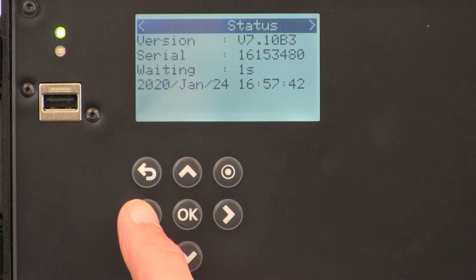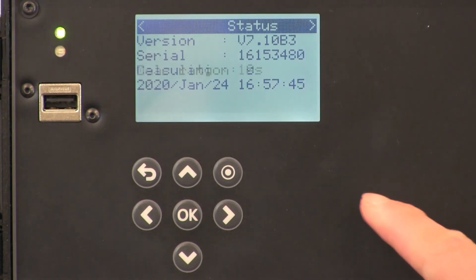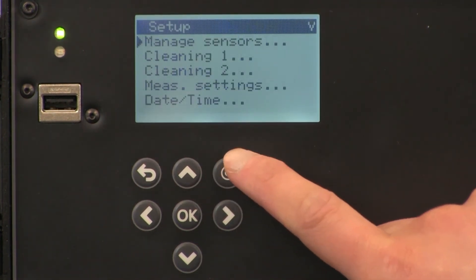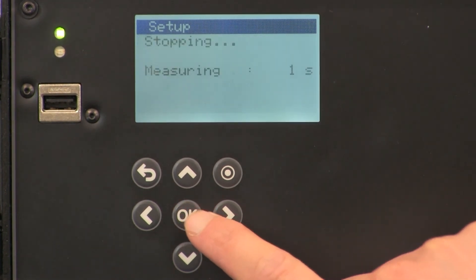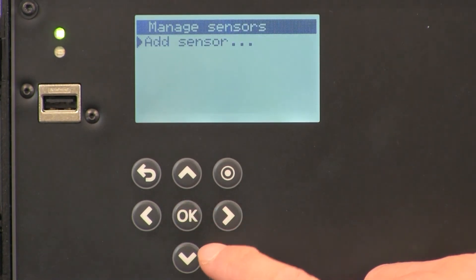Click on the left arrow, and we want to hit the bullseye button, manage sensors, hit OK, add sensor.